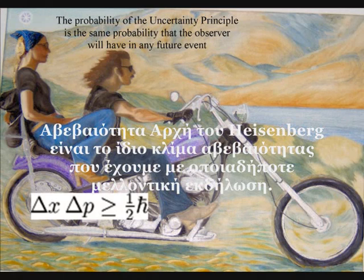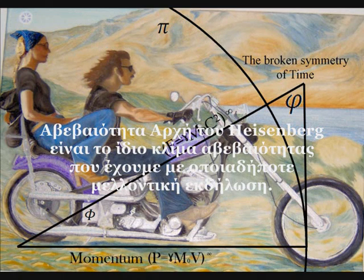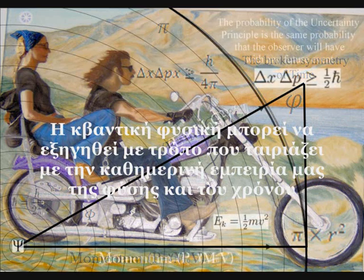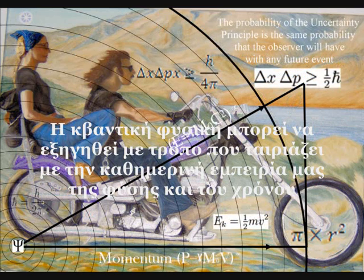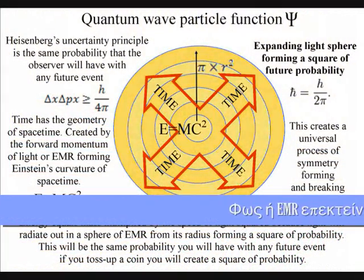The second idea is that Heisenberg's uncertainty principle is the same uncertainty that we have with any future event. From these two simple ideas, quantum mechanics can be explained in a way that exactly fits in with our everyday experience of nature and time, moving from a known past into an uncertain future.